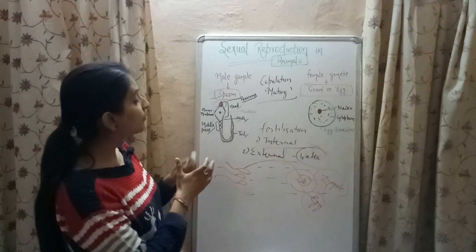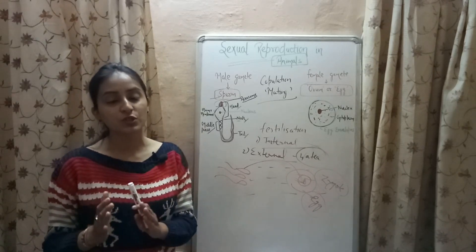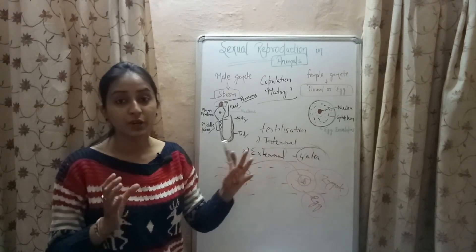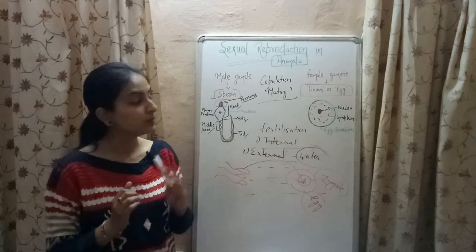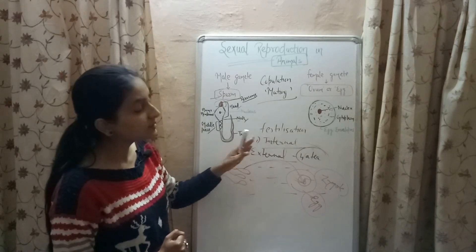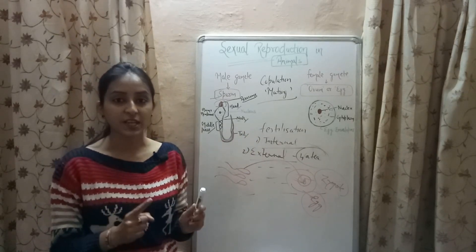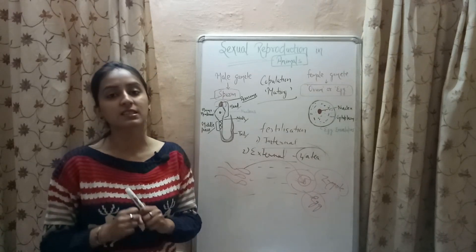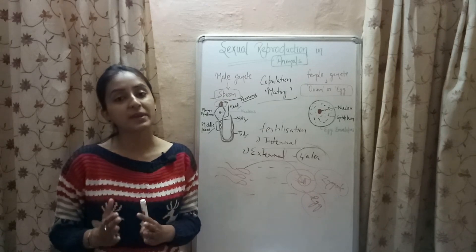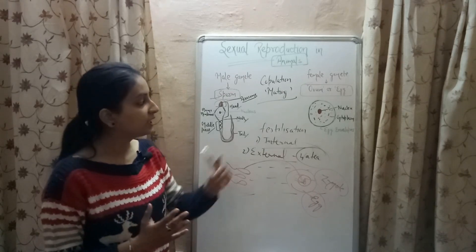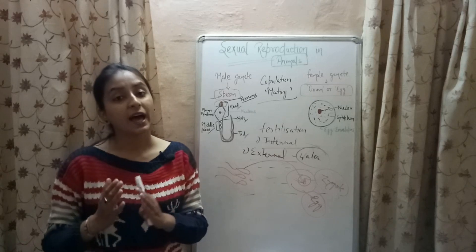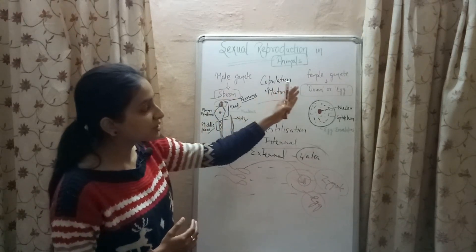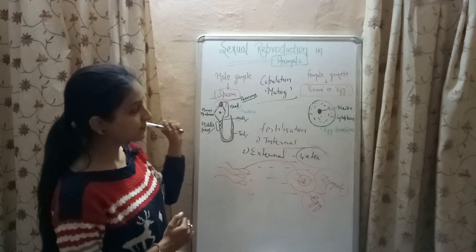To revise: fertilization is the process of fusion of male gamete with the female gamete, leading to the formation of a zygote, which is the fertilized egg. There are two types of fertilization — internal fertilization, which takes place inside the female body, as in human beings; and external fertilization, in which fusion occurs outside the female body in a medium like water, as in frogs and fishes.